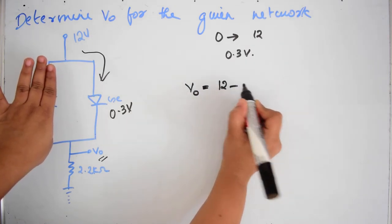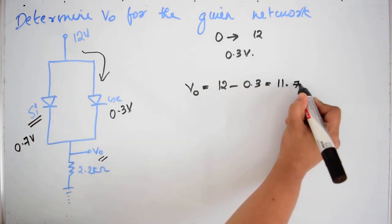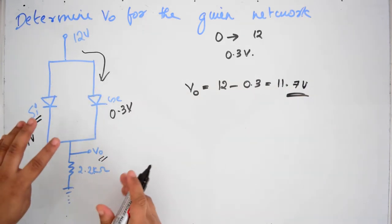V0 is equal to 12 minus 0.3 which is equal to 11.7 volt. This is the answer.